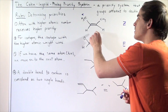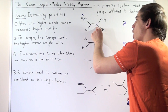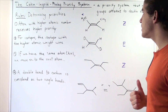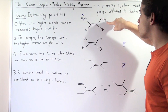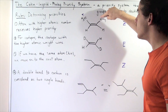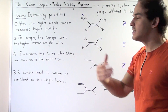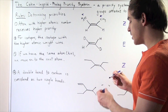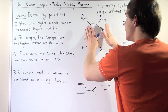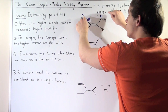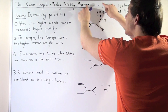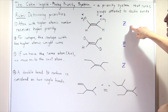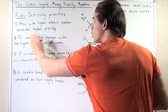Likewise, examining the second carbon of the double bond, it is also attached to a carbon and an H. Which of these two groups has a higher atomic number? Clearly the carbon has a higher atomic number, so the carbon wins — let's label it with an asterisk. Notice that in this compound, the groups with higher priorities are on the same side of the double bond, which means this must be a Z isomer.